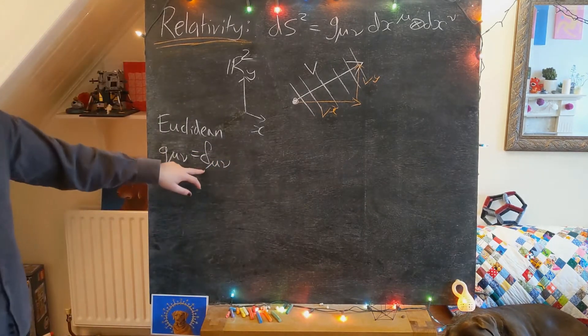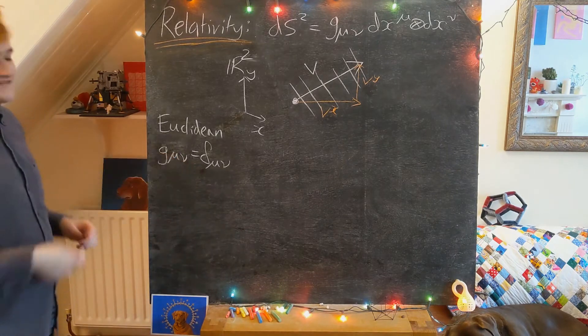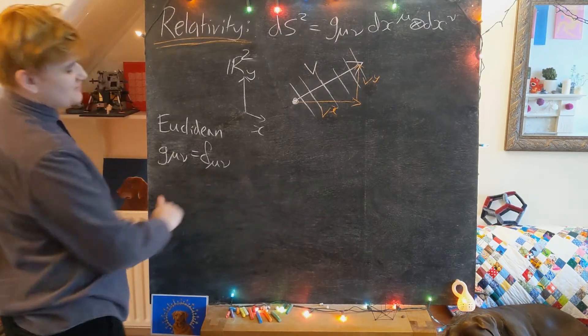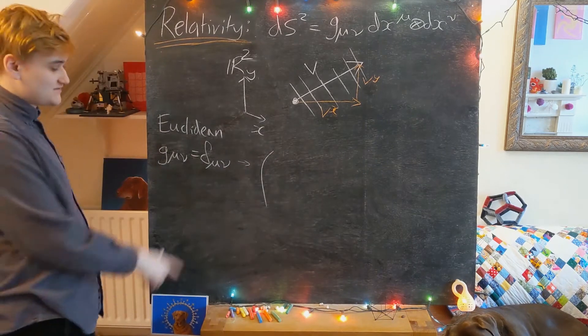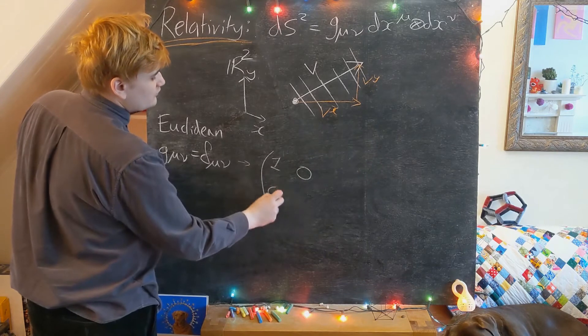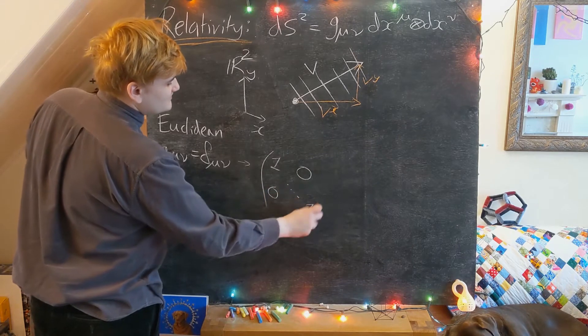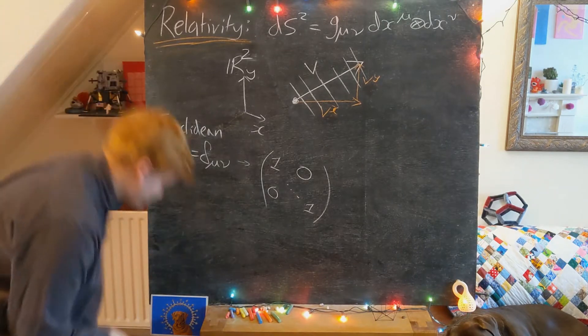So we usually express the identity as the Kronecker delta. Essentially, you can realize this Kronecker delta object as just a matrix where the δ₀,₀ component is 1 and all of the other variables are 0. So Kronecker delta is essentially just the identity matrix.